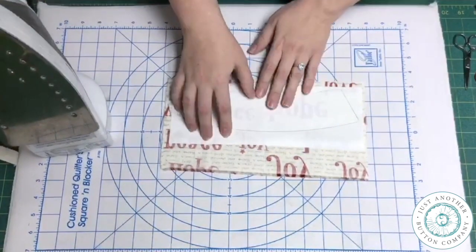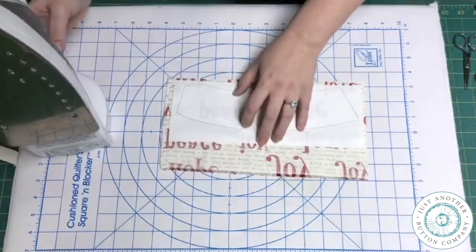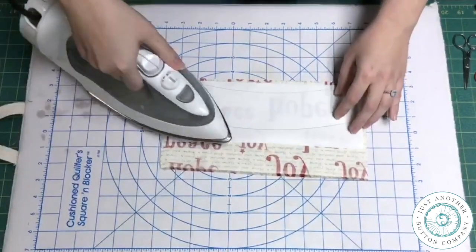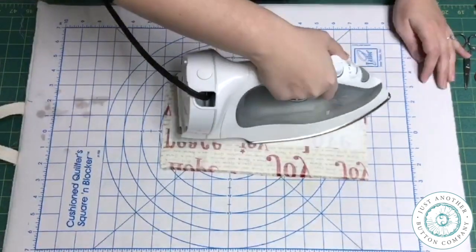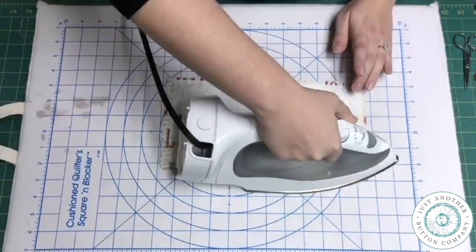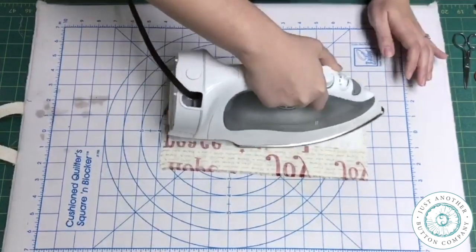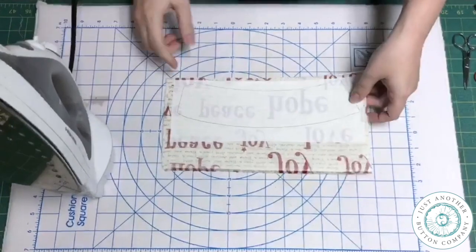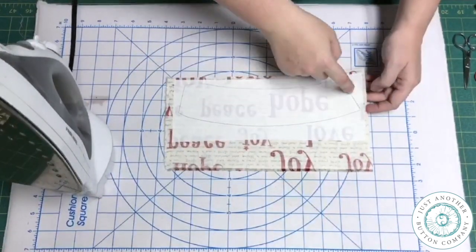So when I have it in the right position I'm going to use my iron and fuse it in place and then I'm going to cut on the lines.